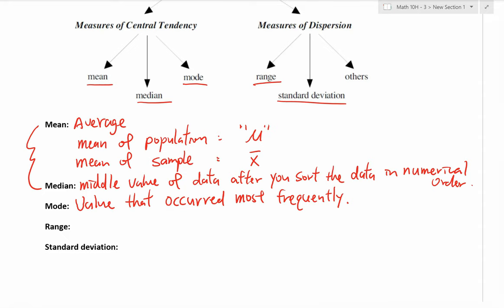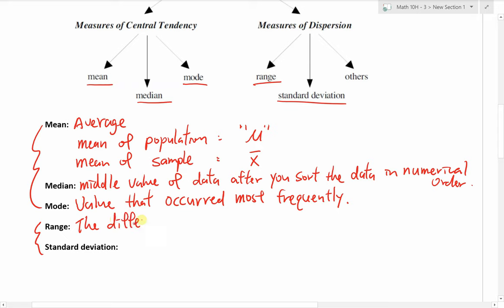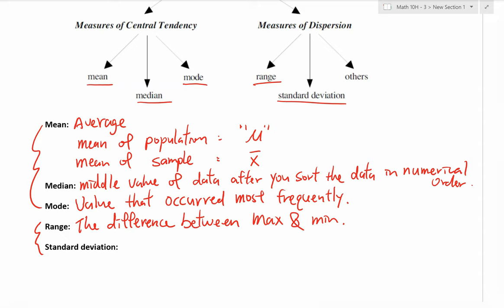These three — mean, median, mode — are the measures of central tendency, and these two are the measures of dispersion. Range is simply the difference between the maximum and minimum. So if the highest score was 100 and the lowest score was 60, then the range would be 100 minus 60, which is 40. That's one way to describe the dispersion of test scores.